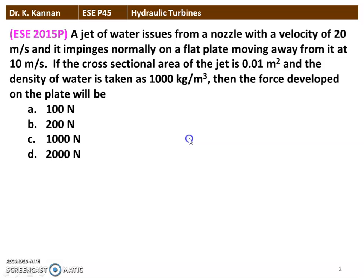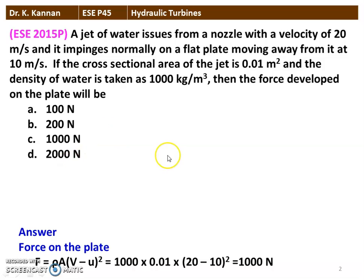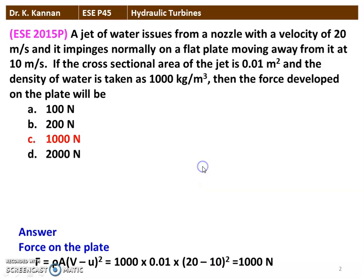We calculate the force on the plate. The jet is hitting the flat plate; the plate is moving at 10 m/s and the jet is at 20 m/s. The force on the moving plate: F = ρA(V − u)², where V is the velocity of the jet and u is the velocity of the plate. Substituting: 1000 × 0.01 × (20 − 10)² = 1000 Newton. The answer is option C, 1000 Newton.